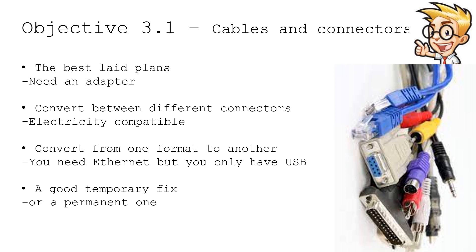Usually we're making these conversions between systems that are electrically compatible. This makes it very easy to have one interface on one end of a cable and a different type of interface on the other end, and we plug both of them together and everything still works properly. Or sometimes instead of adapting one interface to another, we need to convert those signals from one format to another. A good example is an adapter that allows us to connect USB to something like an Ethernet cable. Sometimes these can be temporary fixes or they might just be permanent.